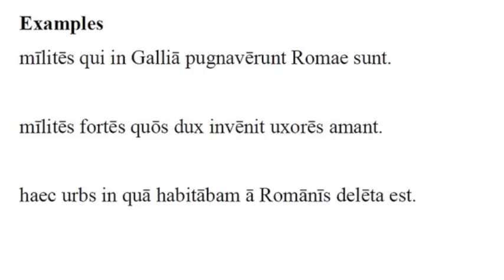Let's look at a handful of examples. Let's start with our first one: 'Milites qui in Gallia pugnaverunt Romae sunt.' Now let's use our strategies to form a relative clause. We're going to put a parenthesis before the relative pronoun qui, and then close our parenthesis after the next verb we see: qui in Gallia pugnaverunt — close parenthesis. This mechanism for finding the relative clause will not always work, but it's a good start. If something goes wrong, you can adjust from there.